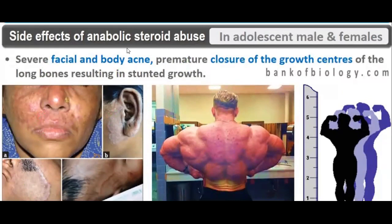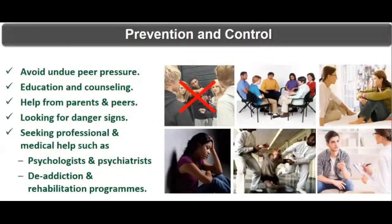Anabolic steroid abuse also causes severe facial and body acne and premature closure of growth centers of long bones, resulting in stunted growth during the developing age. For prevention and control: avoid peer pressure regarding drugs; educate children about the dangers of drugs; parents and friends should help identify warning signs; seek medical help from psychologists and psychiatrists; and participate in rehabilitation programs.